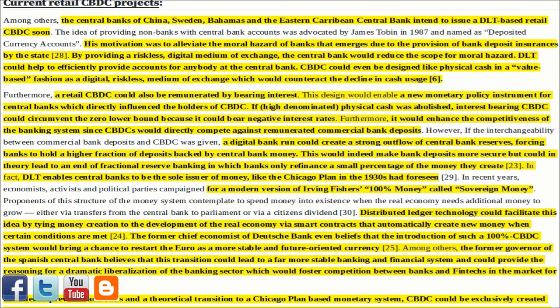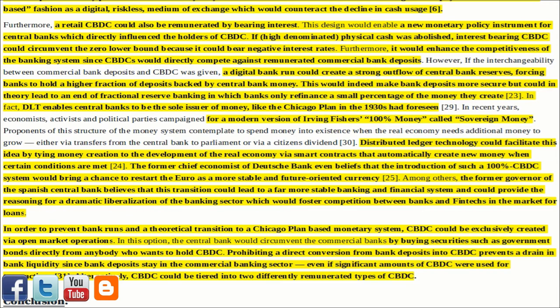The idea of providing non-banks with central bank accounts was advocated by James Tobin in 1987 and named Deposited Currency Accounts. His motivation was to alleviate the moral hazard of banks that emerges due to the provision of bank deposit insurances by the state. By providing a riskless digital medium of exchange, the central bank would reduce the scope for moral hazard. DLT could help to efficiently provide accounts for anybody at the central bank. CBDC could even be designed like physical cash in a value-based fashion — as a digital, riskless medium of exchange — which would counteract the decline in cash usage. Furthermore, a retail CBDC could also be remunerated by bearing interest.